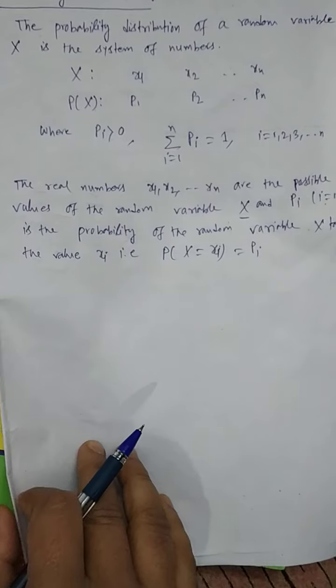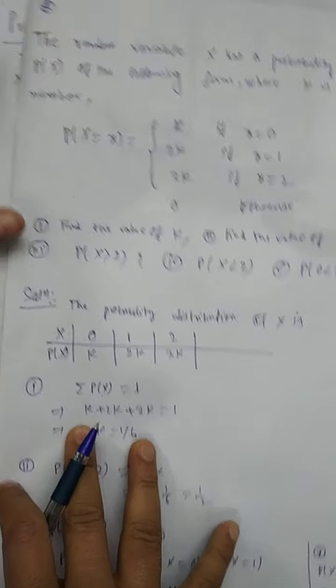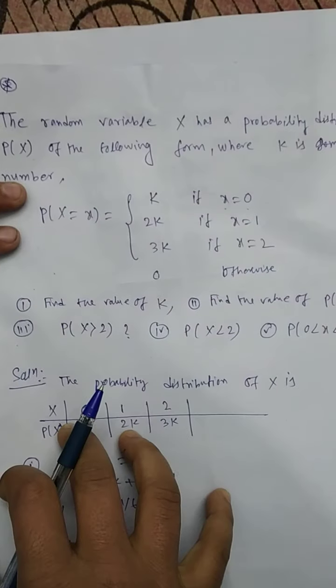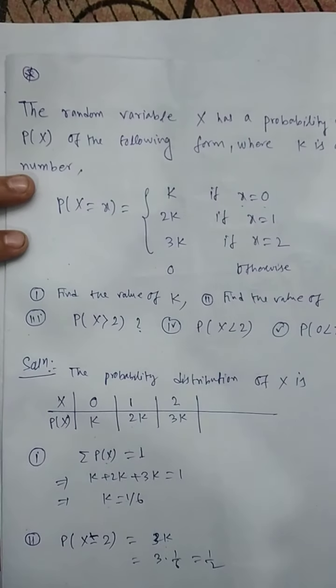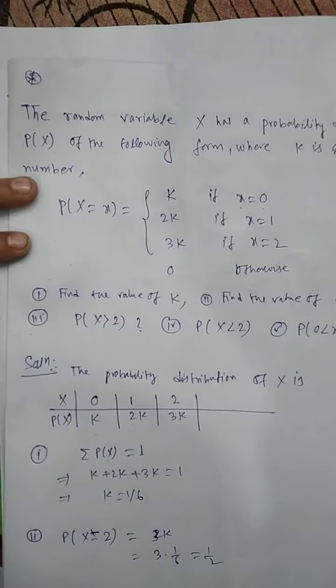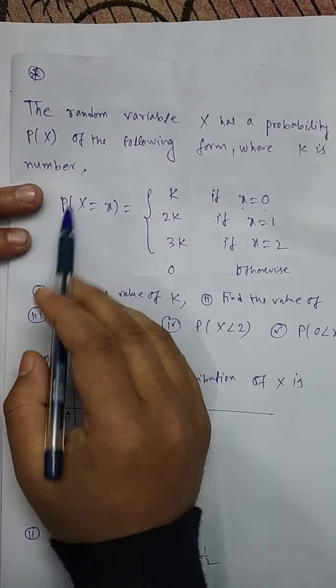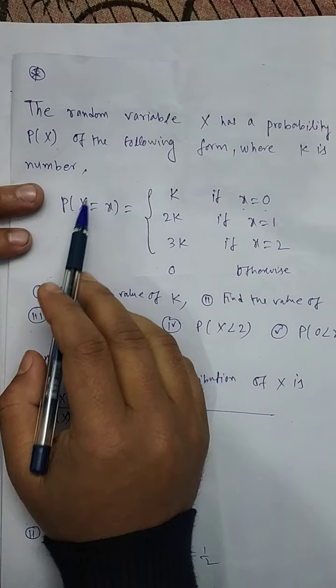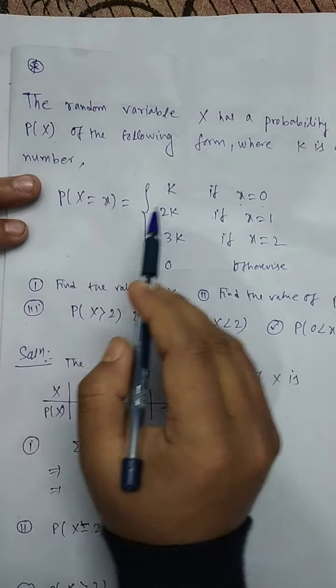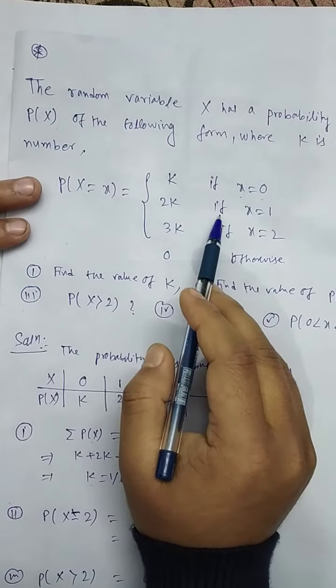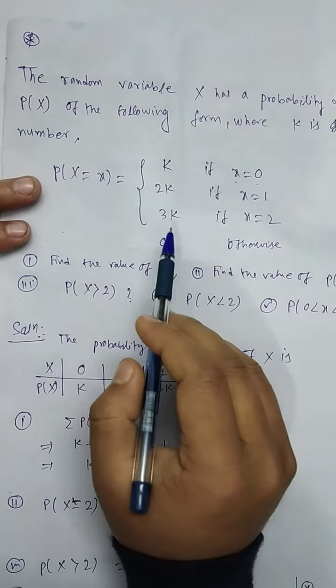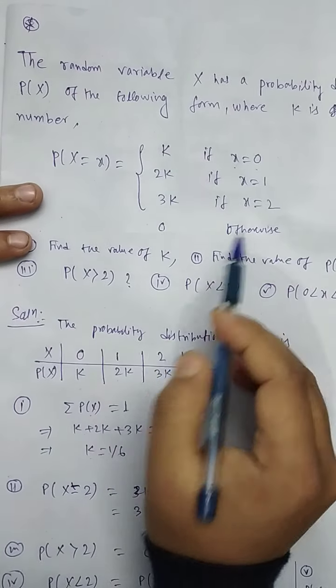Now I am giving an example. The random variable X has a probability distribution P(X) of the following form where K is some number: P(X = x) = K if x = 0, 2K if x = 1, 3K if x = 2, 0 otherwise.